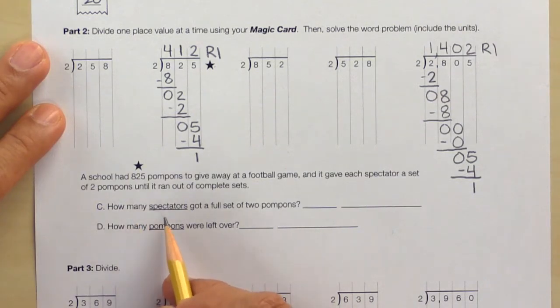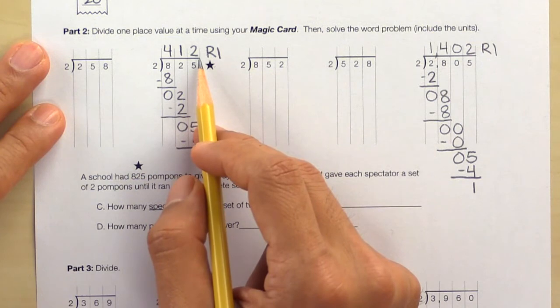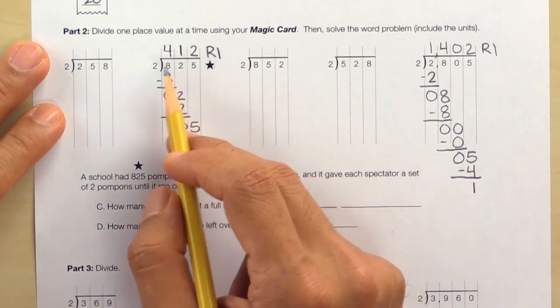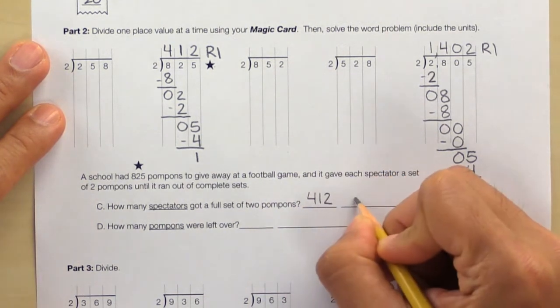How many spectators got a full set of 2 pom-poms? And we can see here that 412 spectators received a full set of 2 pom-poms. We have 412 spectators.